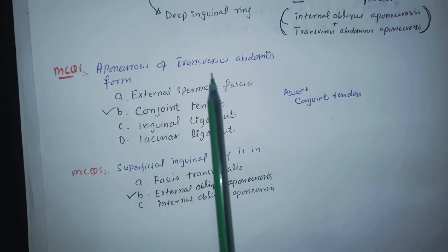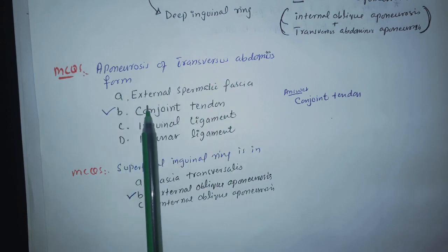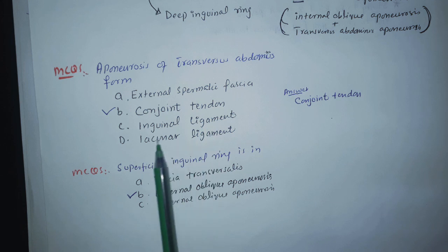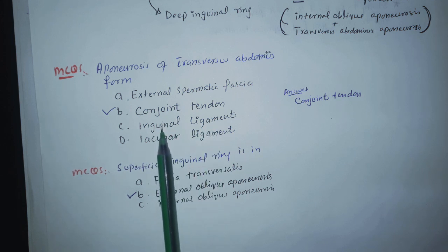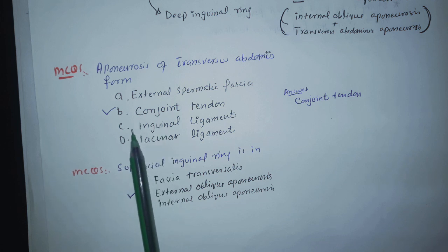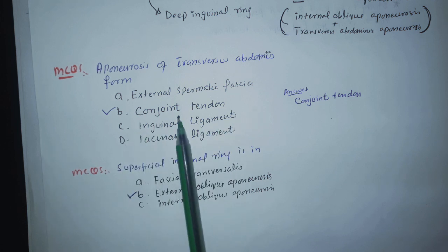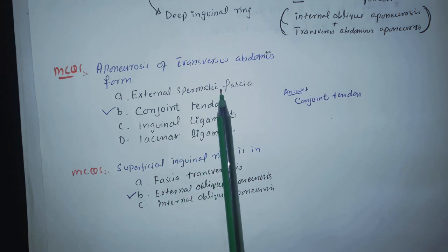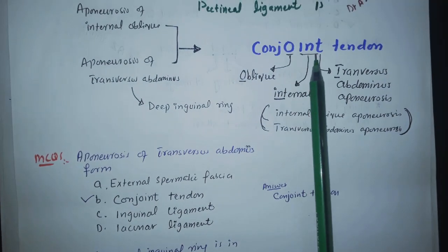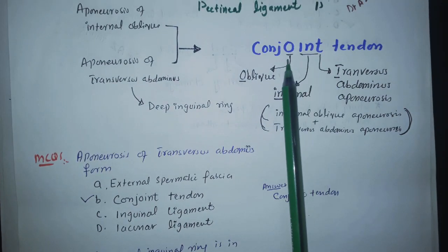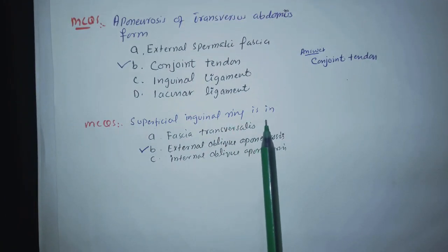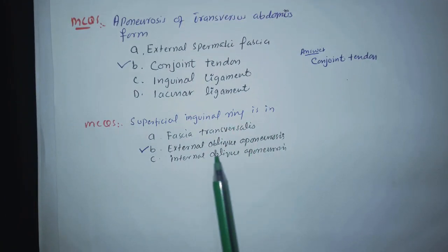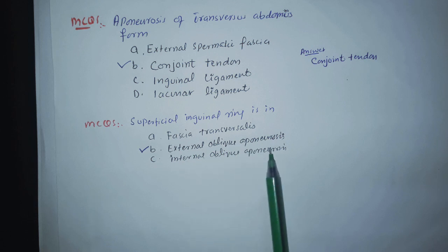Now for MCQs: if asked what the aponeurosis of transversus abdominis forms — the options might be external spermatic fascia, conjoint tendon, inguinal ligament, or lacunar ligament. The inguinal ligament and lacunar ligament are formed by the external oblique aponeurosis, so those are not the answer. The answer is conjoint tendon — remember T for transversus abdominis, I and T for internal oblique. Also, the superficial inguinal ring is a deficiency in the external oblique aponeurosis.